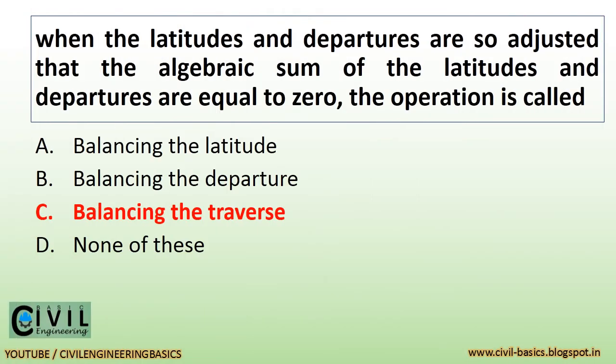When the latitudes and departures are so adjusted that the algebraic sum of the latitudes and departures are equal to zero, the operation is called balancing the traverse.